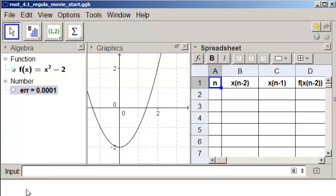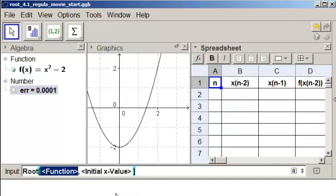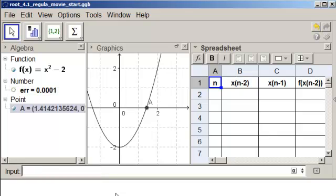And let's have GeoGebra find the root for us. Root, and we're taking the second one down, which uses Newton's method. And f, tab over, and we decided we needed to use the right-hand boundary to get the right-hand root. So 2, enter, and so there is our root using Newton's method.